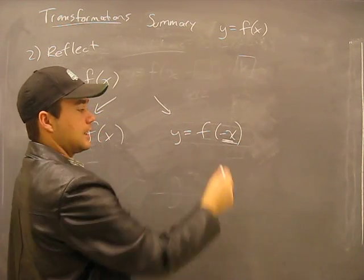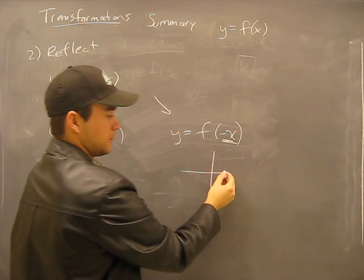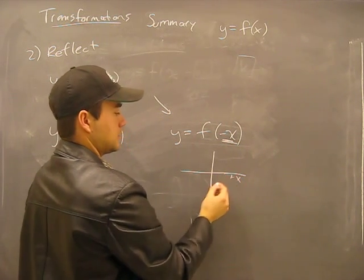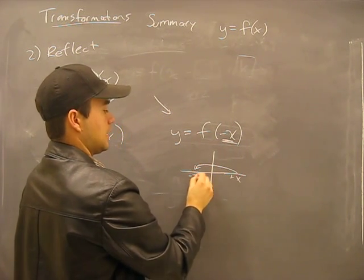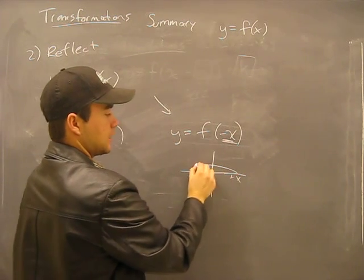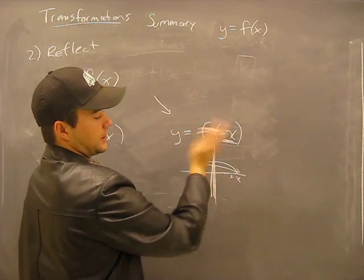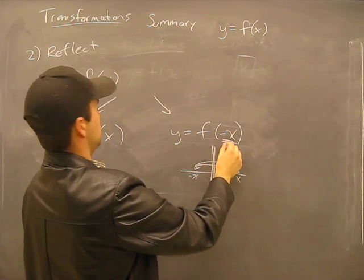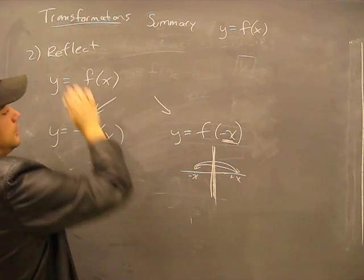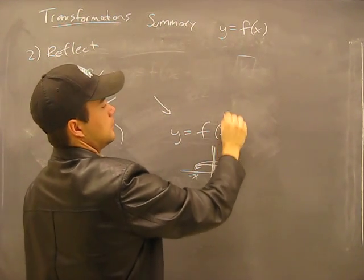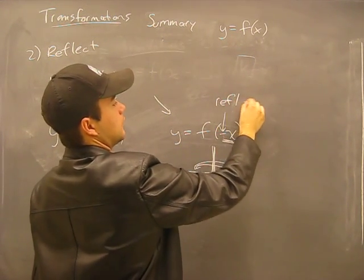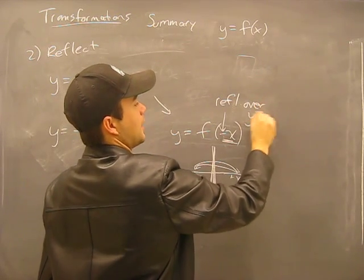Here we're negating the x value, you draw a picture. A positive x becomes a negative x. We negate a negative x, it becomes a positive x. Either way you do it, you're reflecting over the y axis. So a reflection when you have the negative sign here, reflect over y axis.